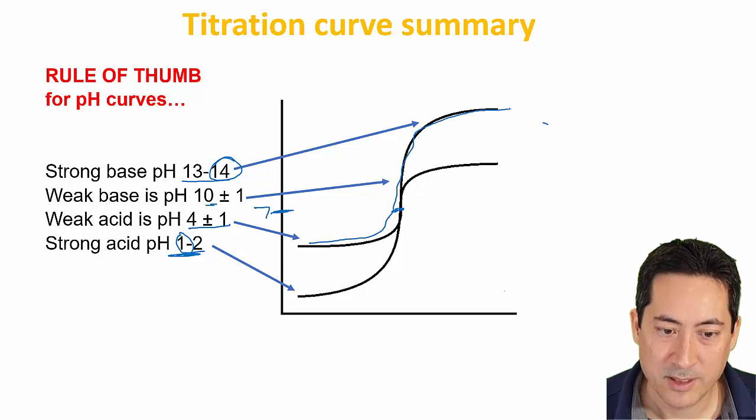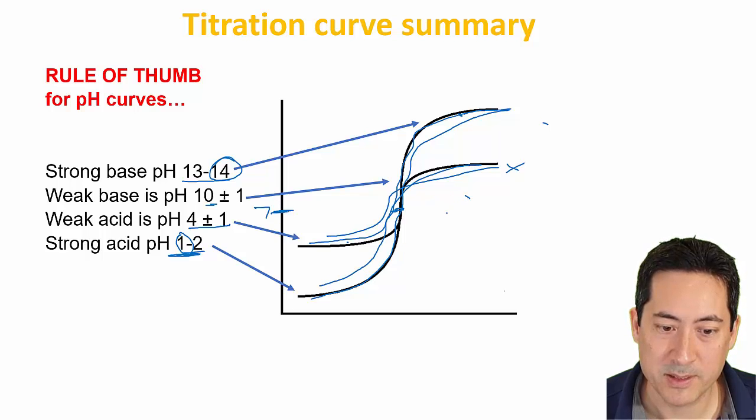If it looks like this, then you've got a weak acid plus a strong base. If you've got this, you've got a strong acid to a strong base. If you've got this, you've got a weak acid and a weak base, which the syllabus is ignoring. And this one here, that's a strong acid and a weak base.